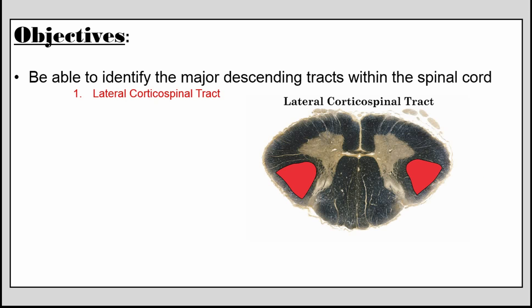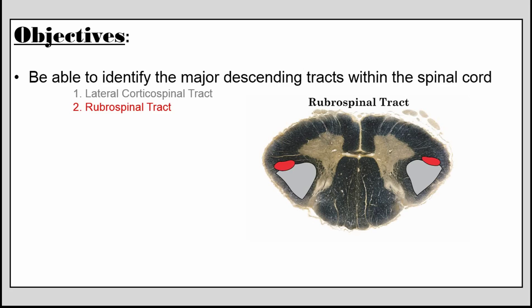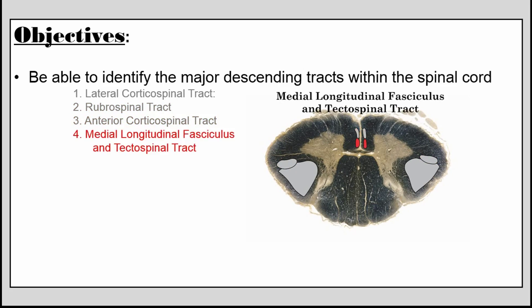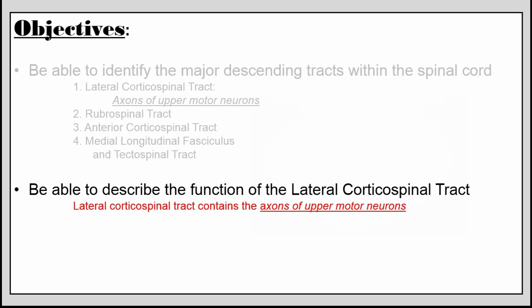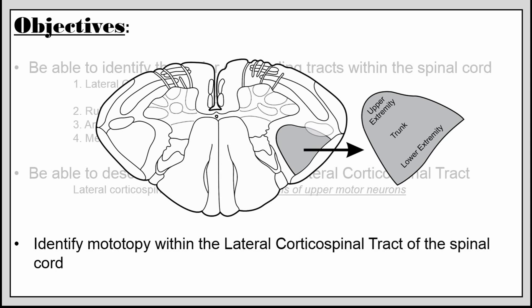Here's a reminder of the objectives. The major descending tracts of the spinal cord include the lateral corticospinal tract, the rubrospinal tract, the anterior corticospinal tract, and the tectospinal tract mixed with fibers of the medial longitudinal fasciculus. We discussed the function of the lateral corticospinal tract, which contains the axons of upper motor neurons. And lastly, we discussed the mototopy of the lateral corticospinal tract. I hope you found this video beneficial. If you have any questions, please feel free to email me — you can find my contact information in the video description. Thanks, and have a great day.